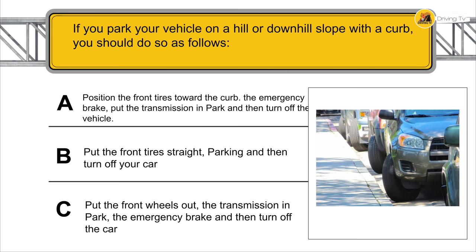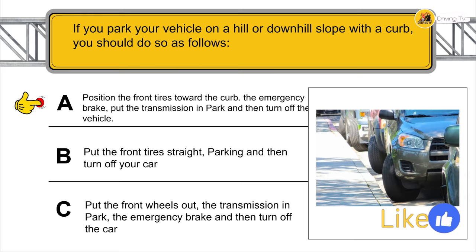If you park your vehicle on a downhill slope with a curb, you should do as follows: position the front tires towards the curb, apply the emergency brake, put the transmission in park, and then turn off the vehicle.